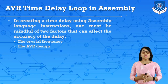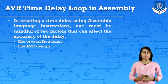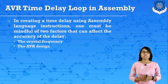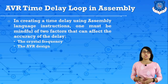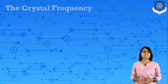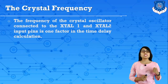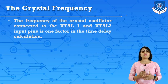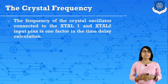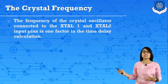When creating a time delay using assembly language instructions, one must be mindful of two factors that can affect the accuracy of the delay: the crystal frequency and AVR design. The crystal frequency of the AVR is the frequency of a crystal oscillator connected to the XTAL1 and XTAL2 input pins, and it is one of the factors in time delay calculation.